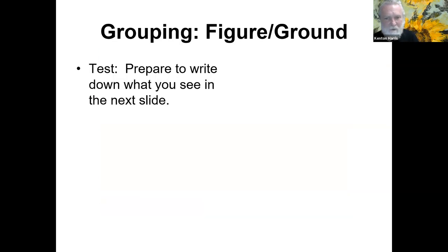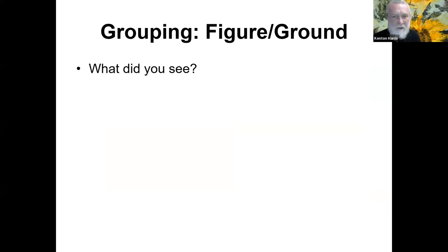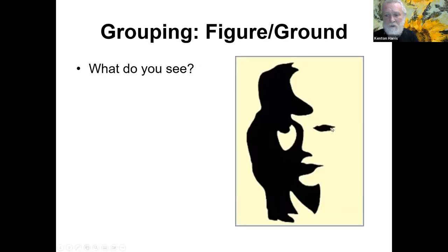Here's a test — prepare to write down what you see. Some of you might say a saxophone player, and some might say a woman's face; some might see both. If you concentrate on this being an eye, a nose, lips, mouth, and chin, you're looking at a woman's face. But if you concentrate on this being a big nose of a man playing a large saxophone, with his foot and the heel of his shoe and his back, then you see the saxophone player.